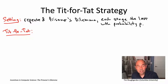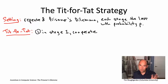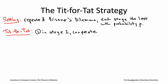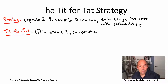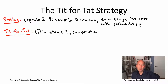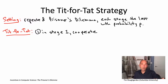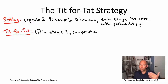The tit-for-tat strategy is very easy to describe. In stage one, cooperate — start optimistically. And then in every stage after the first, you just copy exactly what the other player did in the most recent stage, the previous stage. So if you're at stage 17 and you're Alice, and Bob cooperated in stage 16, then Alice cooperates in stage 17. Whereas if Bob defected in stage 16, then Alice defects in stage 17.